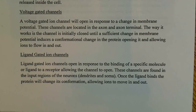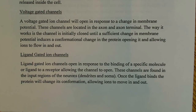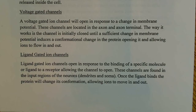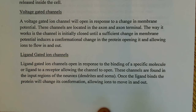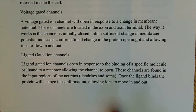The next type is ligand-gated ion channels. Ligands are just small molecules. A ligand-gated ion channel opens in response to the binding of a specific molecule, or ligand, to a receptor, allowing the channel to open. This induces a conformational change in the channel. These channels are found in the input regions of neurons — the dendrites and soma, also known as the cell body. Once the ligand binds, the protein changes its conformation, allowing ions to move in and out. This is the same concept as voltage-gated channels, except a specific small molecule binds to a receptor rather than a change in membrane potential.